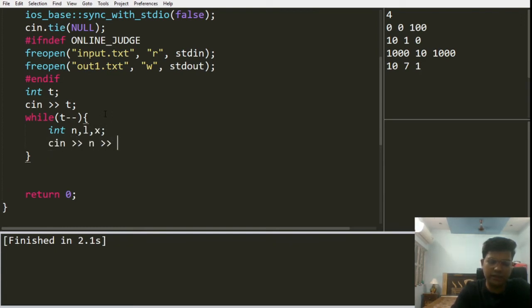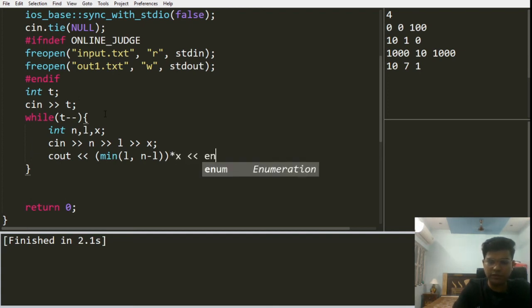Finally what we need to output is minimum of L comma N minus L, and we can multiply the result of this with the value X. So this will be the final answer. Now let's try to run this. So this is what we are getting as the output.